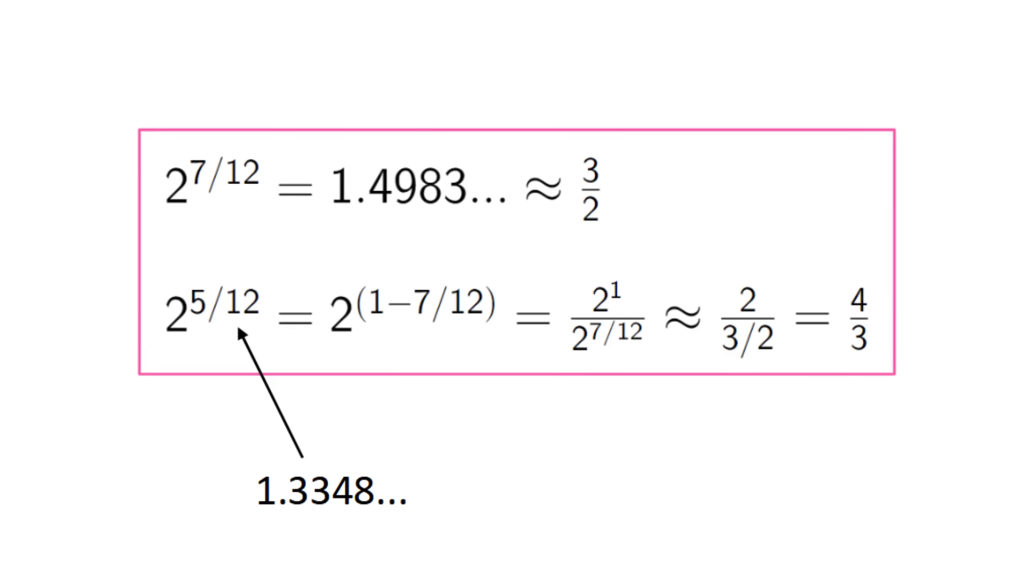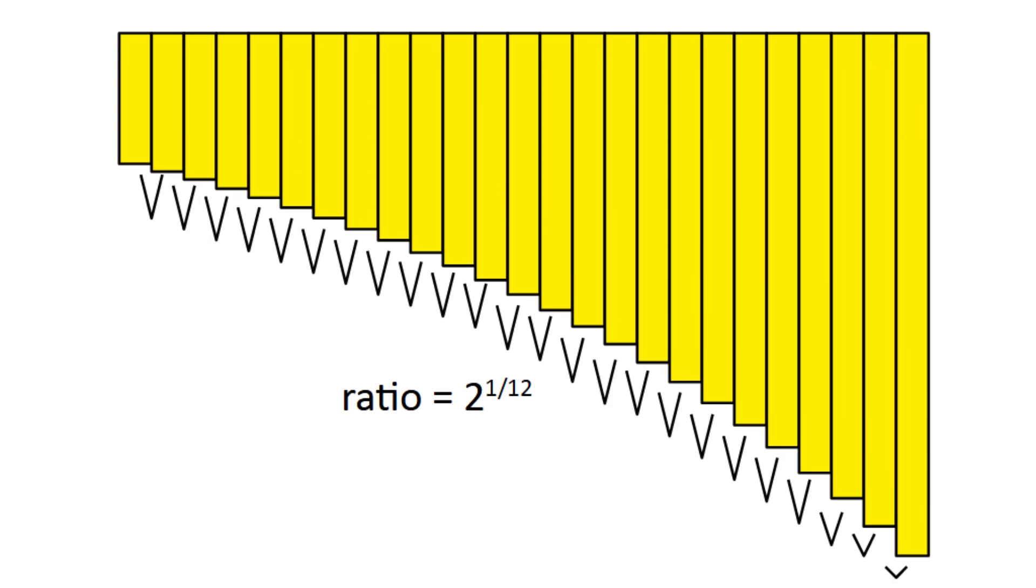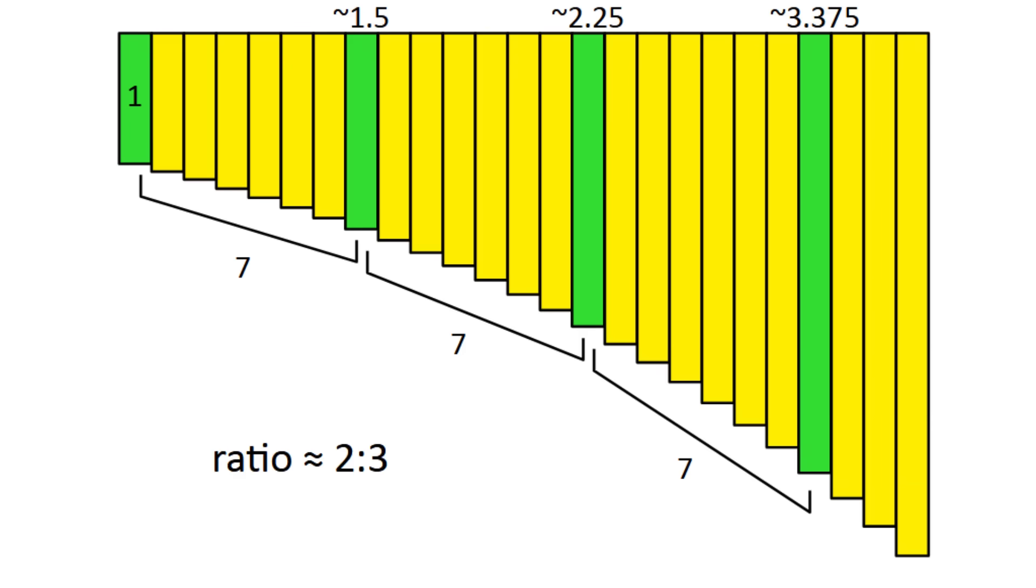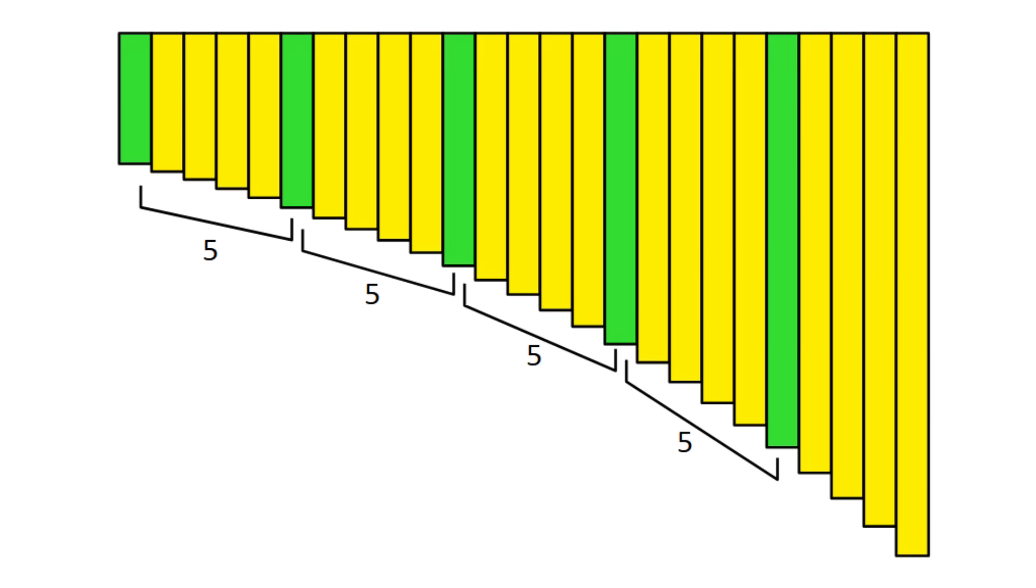Well, imagine a sequence of rectangles where each one is 2 to the 1 twelfth times the length of the previous one. Any pair spaced 12 apart will have a ratio of 1 to 2. Any pair spaced 7 apart will be approximately 2 to 3. And any pair spaced 5 apart will be approximately 3 to 4.